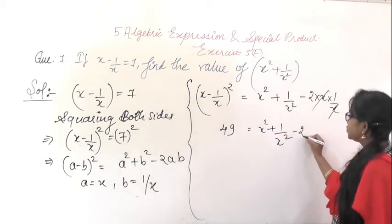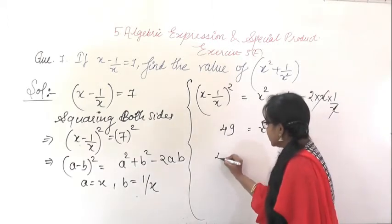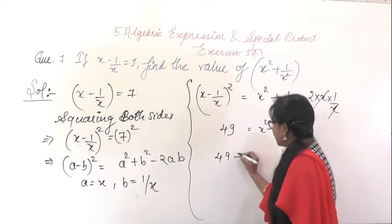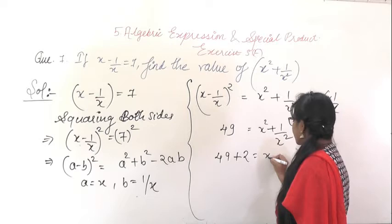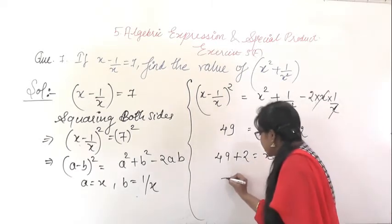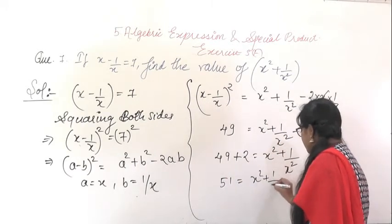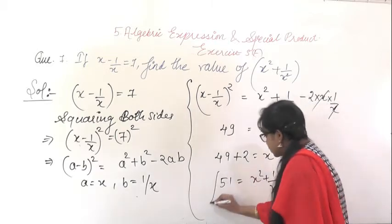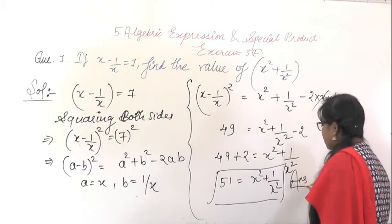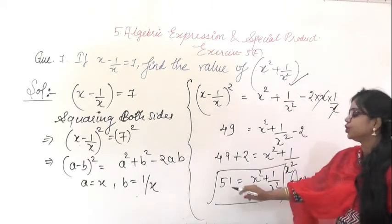So x² + 1/x² − 2 = 49. Transposing minus 2 to the other side, it becomes plus 2: x² + 1/x² = 49 + 2 = 51. So the value of x² + 1/x² is 51.